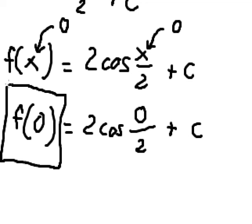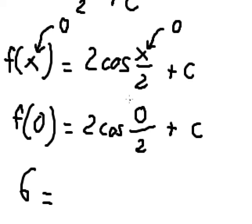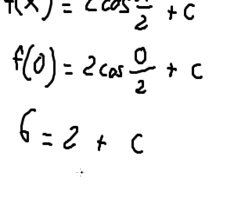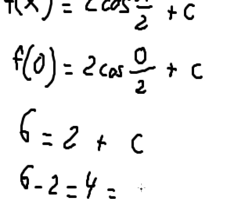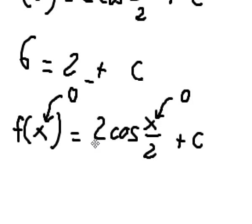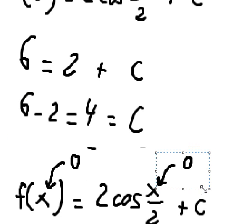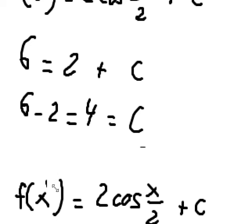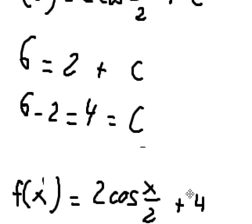We have 6 on this side, and cosine of 0 equals 1, so we have 2. Now we can find the value of C. I will move 2 to the left, and we have C equals 4. So we go back and put the value of C in. Here is the final answer.